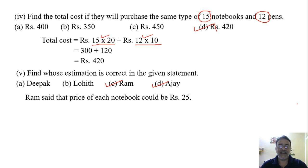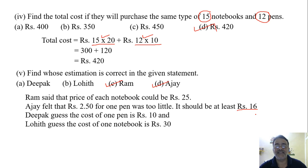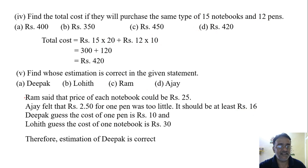Ram said that the price of each notebook could be rupees 25. Ajay felt that rupees 2.50 for 1 pen was too little. So it should be at least 16. Deepak guessed the cost of 1 pen is rupees 10. And Lohit guessed the cost of 1 notebook is rupees 30. So among them the guessing of Deepak is estimation of Deepak is the correct one. Any doubt in this fifth question? So the correct answer is A bit.